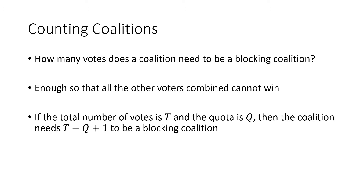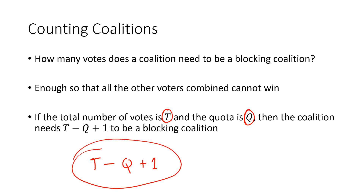How many votes do you need to be a blocking coalition? The quota Q tells us how many votes we need to win. But to block, you need enough votes so that all the other voters combined cannot win. If the total number of votes is T and the quota is Q, then T minus Q is the number of votes that, if those voters vote no, leaves exactly Q votes remaining — just enough to pass. So you need one more than T minus Q, giving the formula T minus Q plus 1, to ensure the remaining votes fall to Q minus 1, just under the quota.